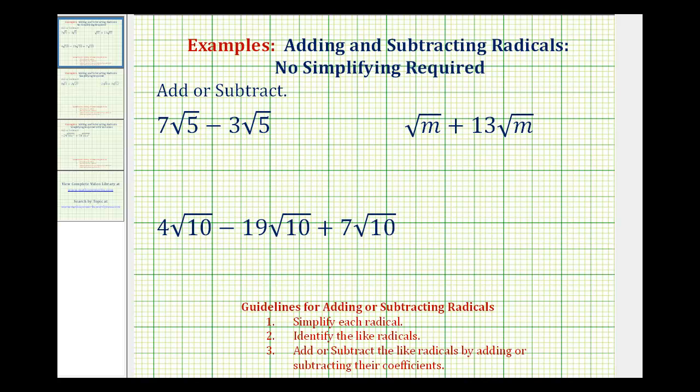But in general, to add or subtract radicals, we should first simplify each radical, then identify the like radicals, and then we can add or subtract the like radicals by adding or subtracting the coefficients.